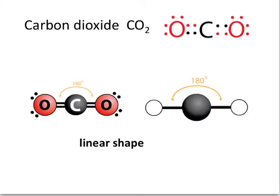Another good example is carbon dioxide, CO2. Its Lewis diagram shows a double bond on each side of carbon. So carbon has only two domains around its central atom; they get as far away from each other as possible, which is 180 degrees. So carbon dioxide takes up a linear shape.